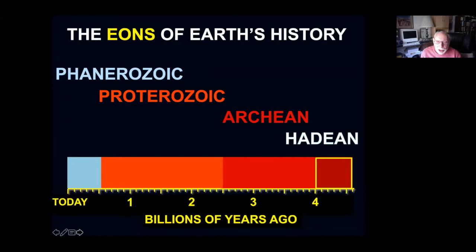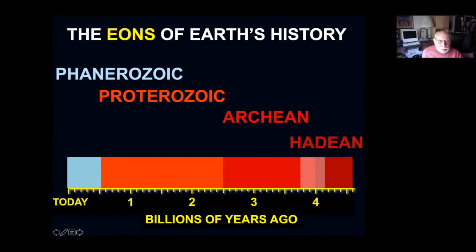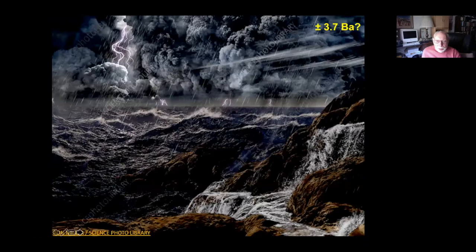The first eon of Earth's history is called the Hadean, and it was a rather hellish time — hot bombardment, essentially full-time, by meteors and asteroids. It was not a pleasant time to be on the planet; nothing could have lived here at that time. But toward the end of the Hadean, and extending into the next eon, the Archean, the rains came. Puddles became ponds, ponds became lakes, lakes became seas, and finally, about 3.7 billion years ago, we have the ocean.